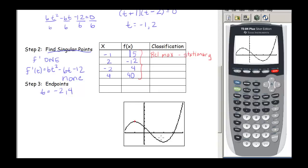Next, at t equals 2, y equals negative 12 — that's this point right here. It's a low spot, so it's a minimum. Looking at all the y-values, this is our lowest, so it is the absolute minimum, and it is also stationary.